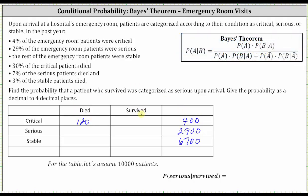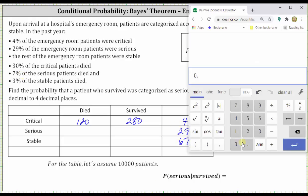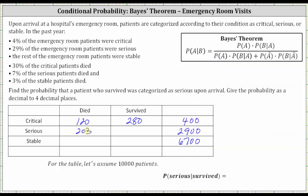To find the number that survived, we take 400 and subtract 120, which equals 280. 7% of the serious patients died. To find 7% of 2,900, we convert 7% to a decimal: 0.07 times 2,900 equals 203. So 203 serious patients died.